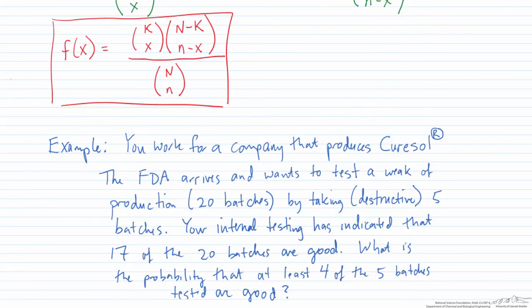Here's an example problem. You work for a pharmaceutical company that produces a product called Curzol. The FDA arrives and wants to do a random check — they want to test a week's worth of production. In a week your company makes 20 batches. They're going to take five of them in a destructive test, so it's sampling without replacement. Your internal testing indicated that 17 of the 20 batches are good. What is the probability that at least four of the five batches tested are good?